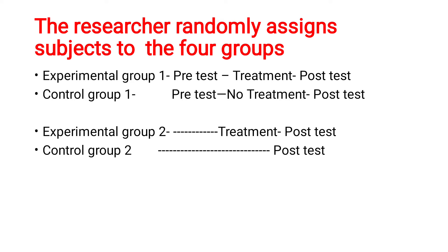Taking the example of assessing the effectiveness of a structured teaching program on diabetes mellitus: for Experimental Group 1, you give a pre-test questionnaire on diabetes mellitus, then conduct the structured teaching program, then assess post-test knowledge. For Control Group 1, you only take the pre-test on diabetes mellitus — no structured teaching program — then assess the post-test. For Experimental Group 2, no pre-test — you directly give the structured teaching program and then do the post-test. For Control Group 2, no pre-test and no structured teaching program — only the post-test knowledge is assessed.